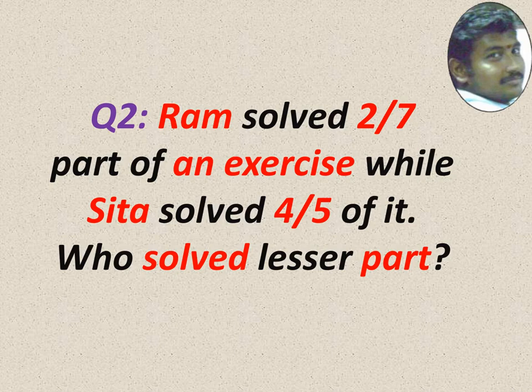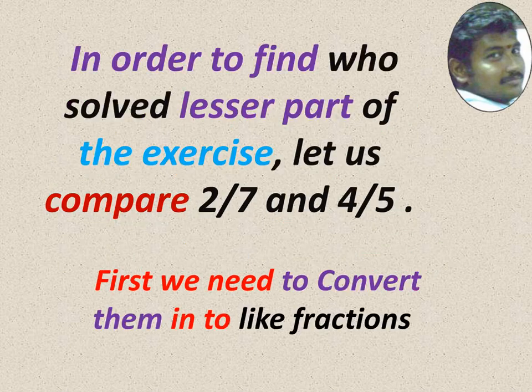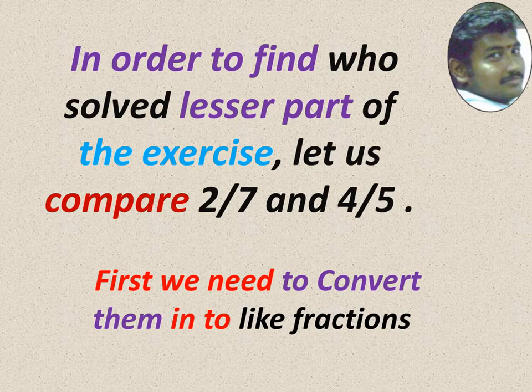Ram solved 2 by 7 part of an exercise, while Seta solved 4 by 5 of it. The same exercise, Ram solved 2 by 7, Seta solved 4 by 5. Who solved lesser part? This is the question. So how to find? Who solved lesser?